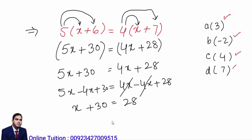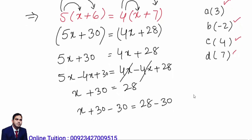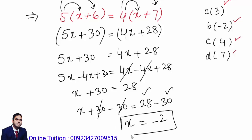Now subtract 30 from both sides to isolate x: x plus 30 minus 30 equals 28 minus 30. The 30s cancel on the left side, and on the right side 28 minus 30 equals negative 2 because 30 is greater than 28. So x equals negative 2. In this question, B is the correct option.